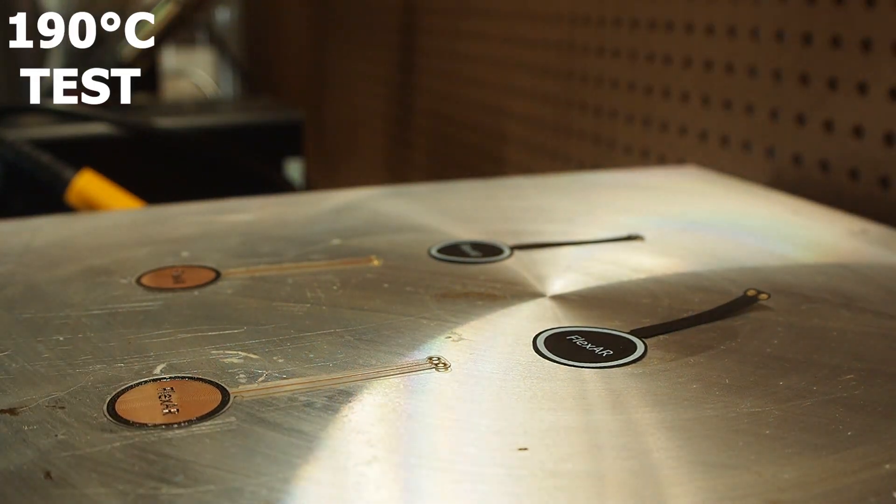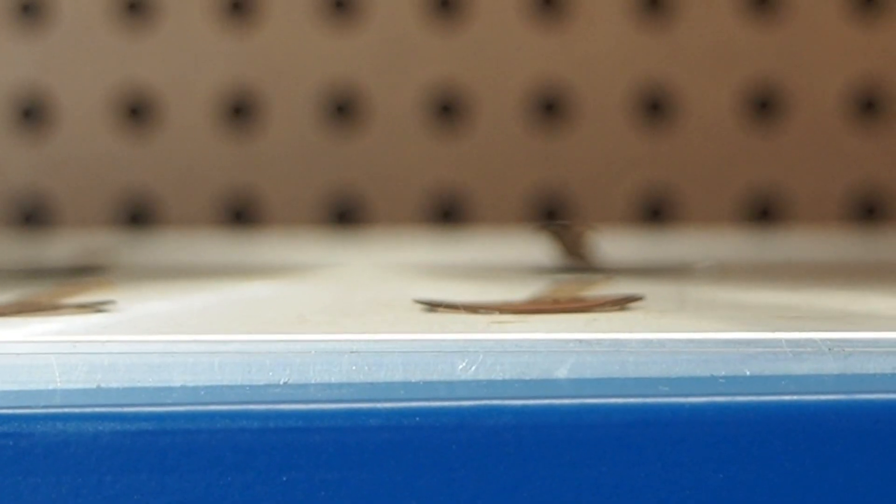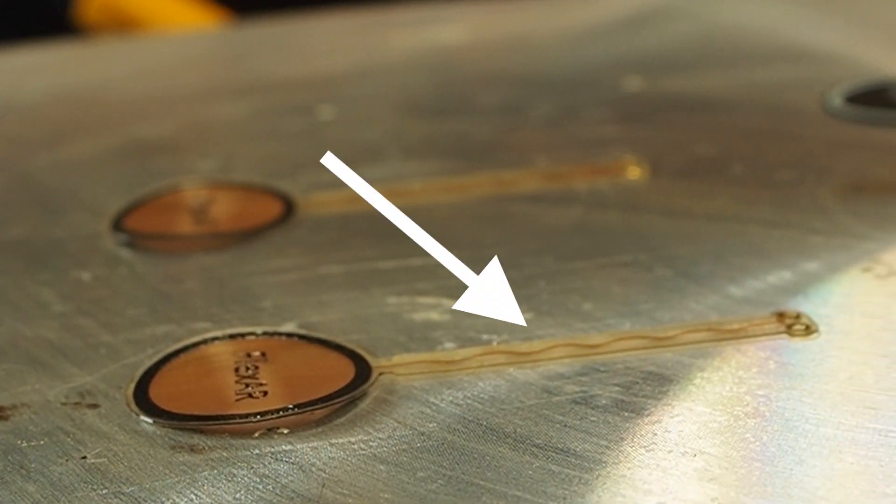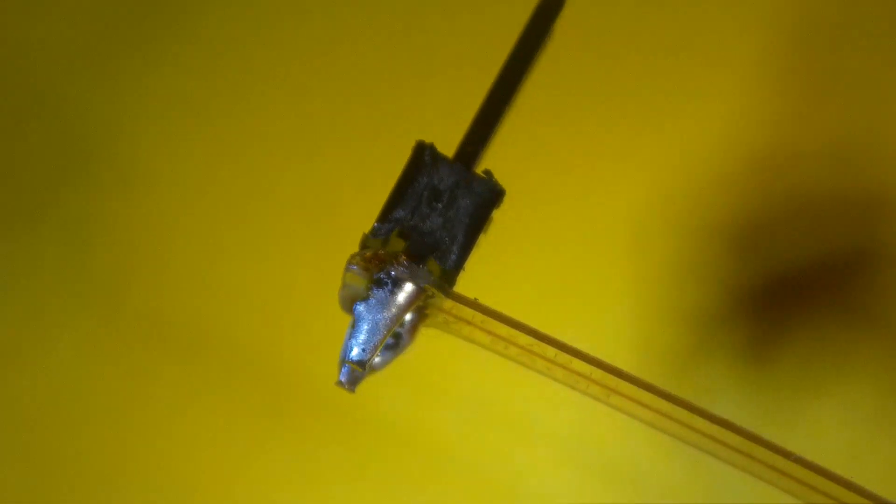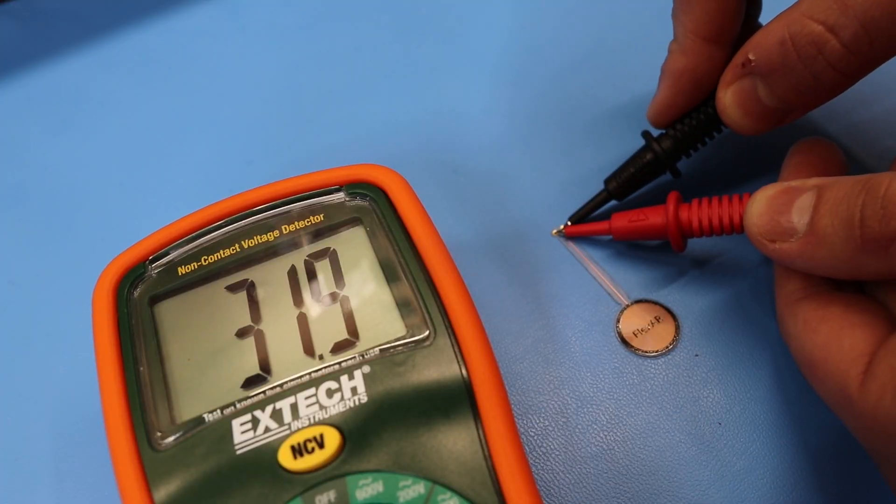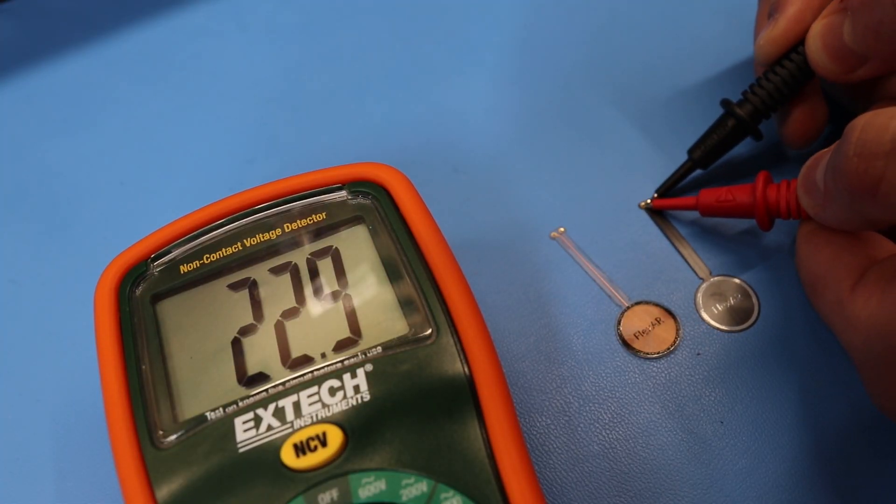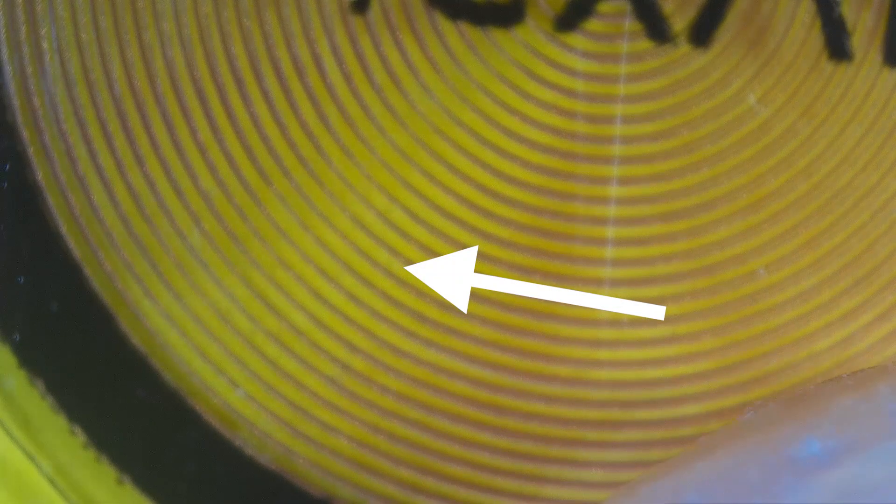The plastic deformation started happening around 215 degrees Celsius because the coil area started bending from the edges and the surface also got wrinkly. Soldering the pads directly did minor damage, which was impressive because the tip was at around 300 degrees Celsius. I also found that the coil's DC resistance had increased. This variation might have happened because part of the transparent PCB had inconsistent copper width.